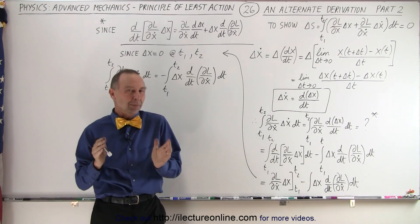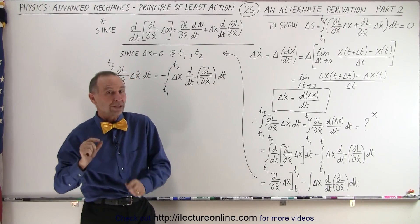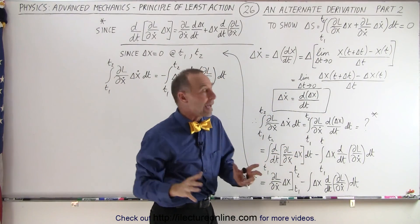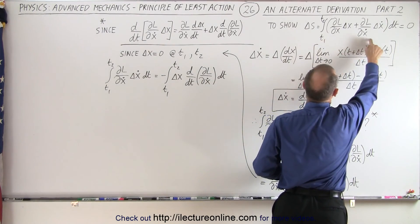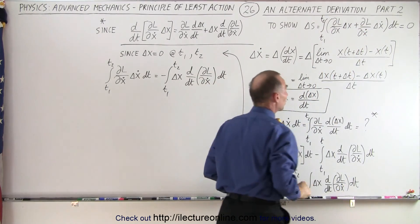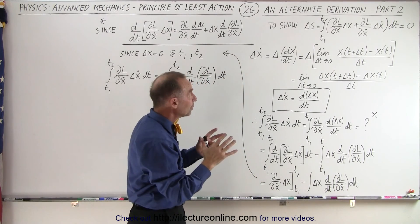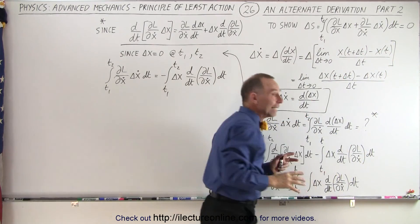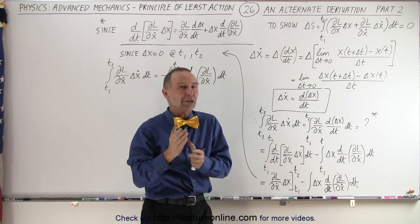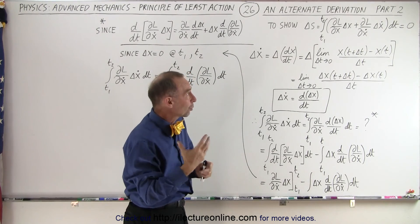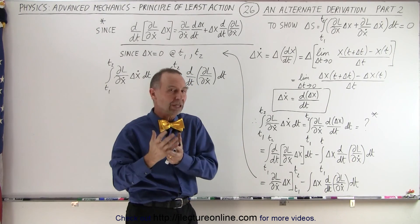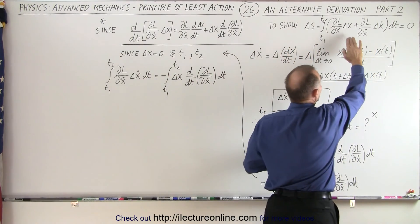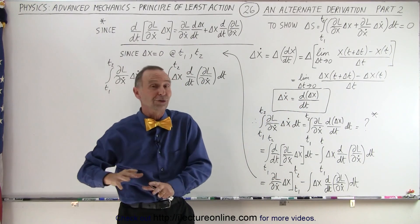Welcome to our lecture online. Remember what we were trying to do: we were trying to show that the additional action required to travel an alternate path could be calculated using this equation by using the concept of the Lagrangian. We're going to show that this is indeed equal to zero if we're on the path of least action — that is, if the additional action from taking an alternate path equals zero, we're actually on the true path.